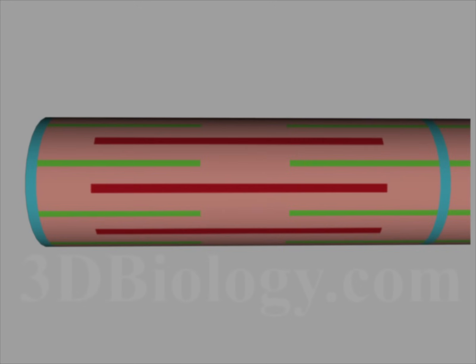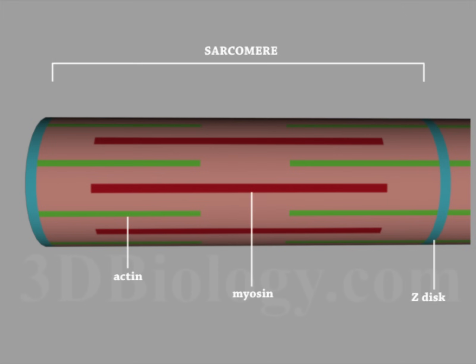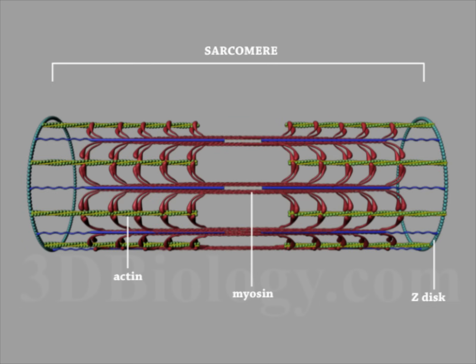A sarcomere, the functional and structural unit of muscle, consists of thick myosin filaments and thin actin filaments. Titin keeps thick filaments centered during contraction.